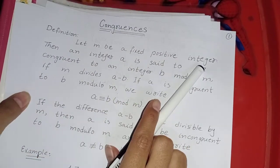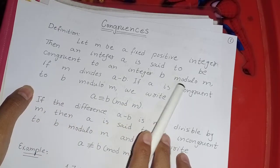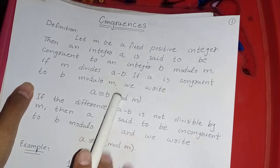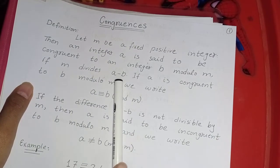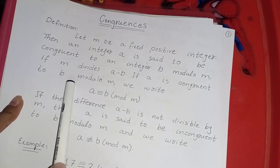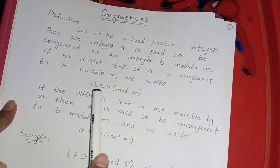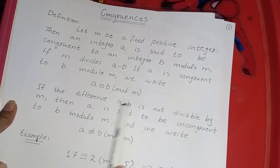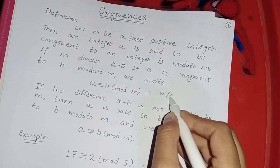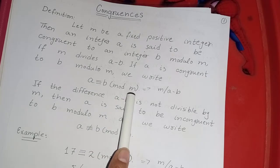Let M be a fixed positive integer. Then an integer A is said to be congruent to an integer B modulo M if M divides A minus B. If A is congruent to B modulo M, we write it as A ≡ B (mod M), and we read it as: A is congruent to B modulo M, where M divides A minus B.